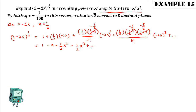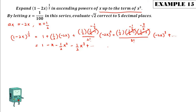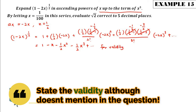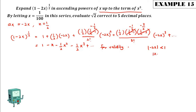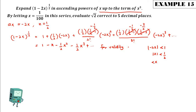Even though this question doesn't explicitly mention validity, we still need to state the values of x valid for this expansion. For validity, we take |ax| < 1, where ax is −2x, so |−2x| < 1, giving |x| < 1/2. Therefore x must lie between −1/2 and 1/2.